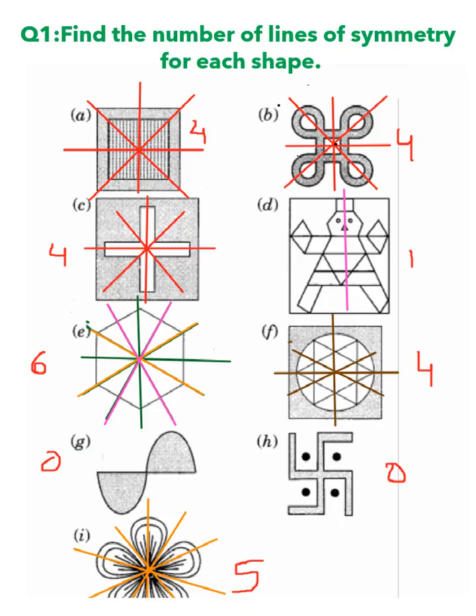So here was the first question in which you have to find the number of lines of symmetry for each shape. You have to draw the dotted line of symmetry in each case and the answers are given below for your reference. In part G and part H, there is no line of symmetry, so it is written zero. In all the other parts, the lines of symmetry have been drawn.